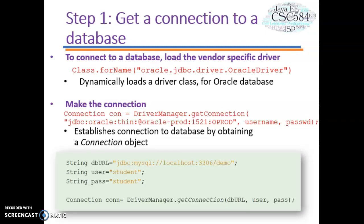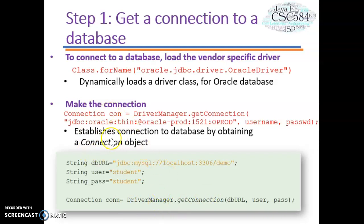Step one: get a connection to a database. In this step, first we need to load the vendor-specific driver class. For example, for Oracle Database, the syntax is oracle.jdbc.driver.OracleDriver, which dynamically loads the driver class specific to Oracle. Then you need to establish the connection using the Connection class. You declare the relevant variables, then create a connection object by calling the getConnection() method through the DriverManager class to establish the connection to the database.